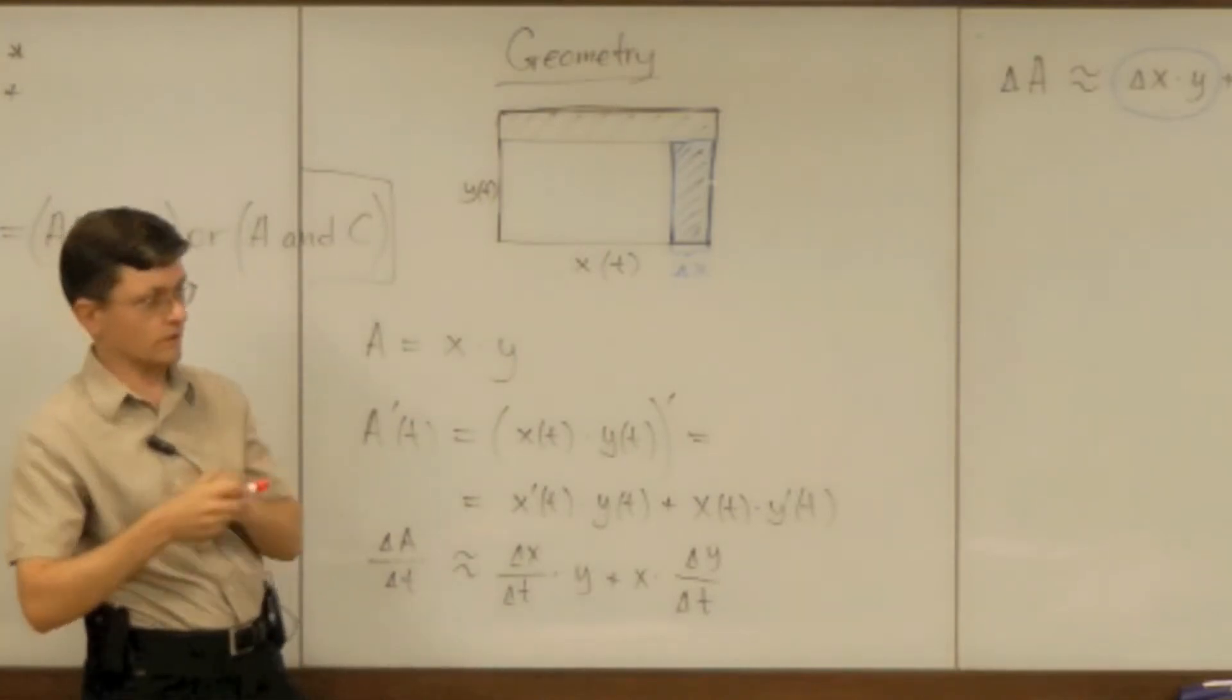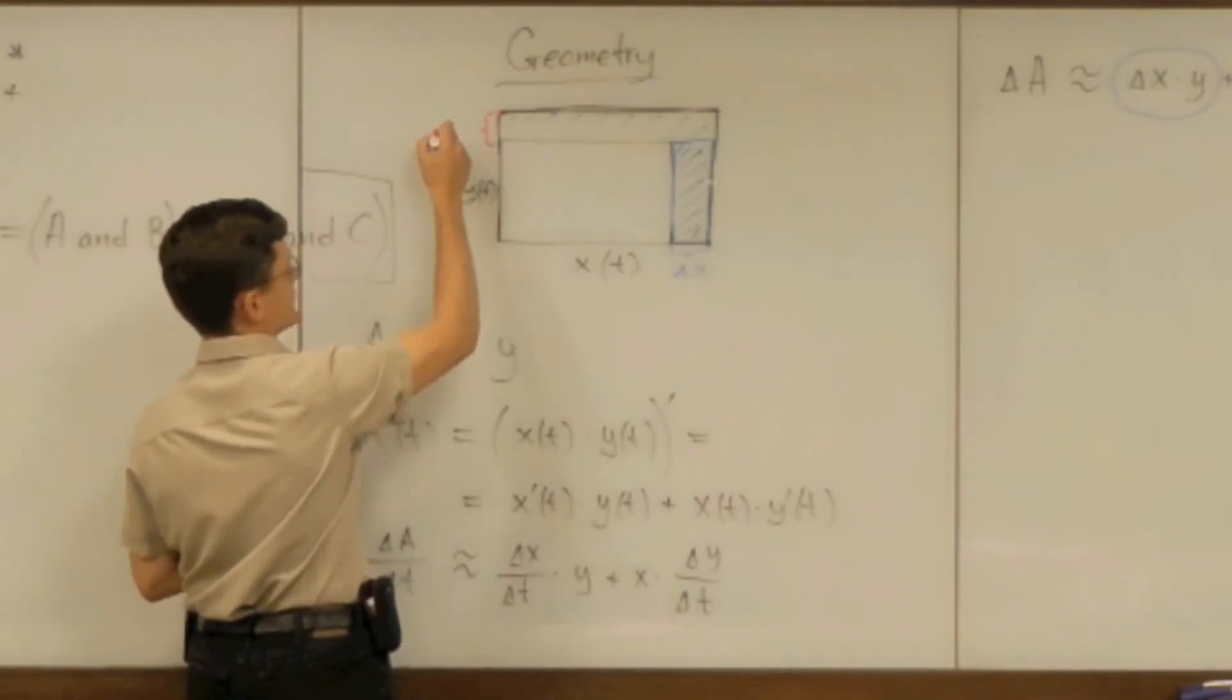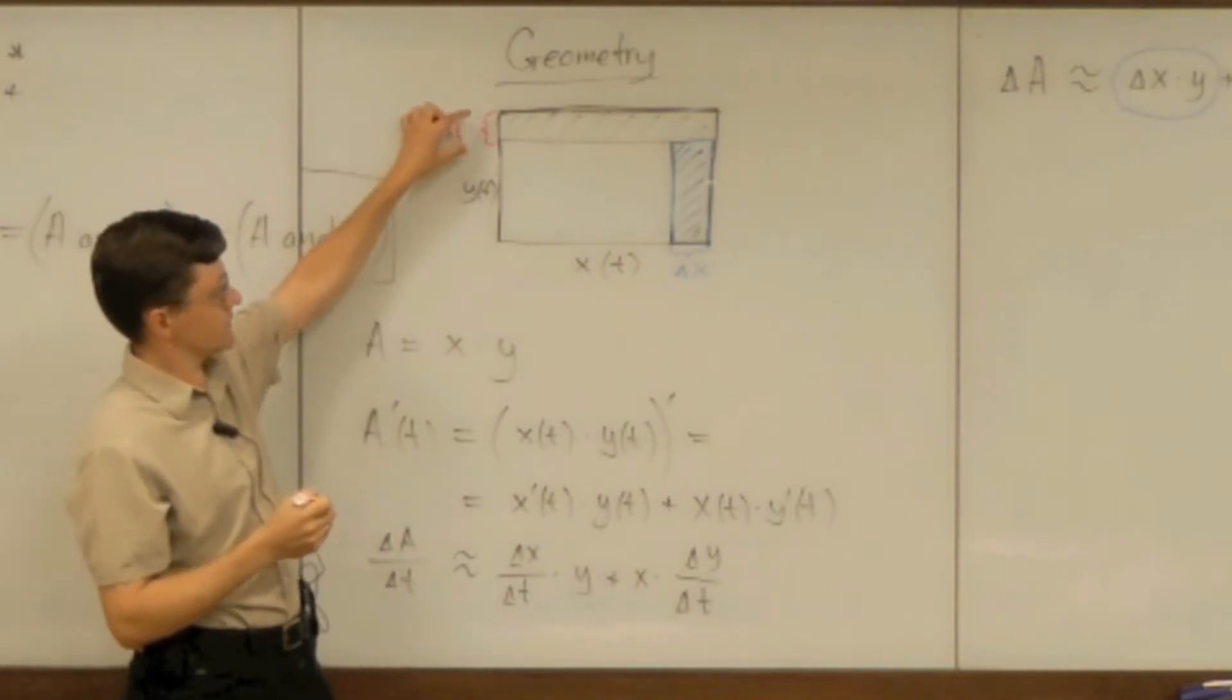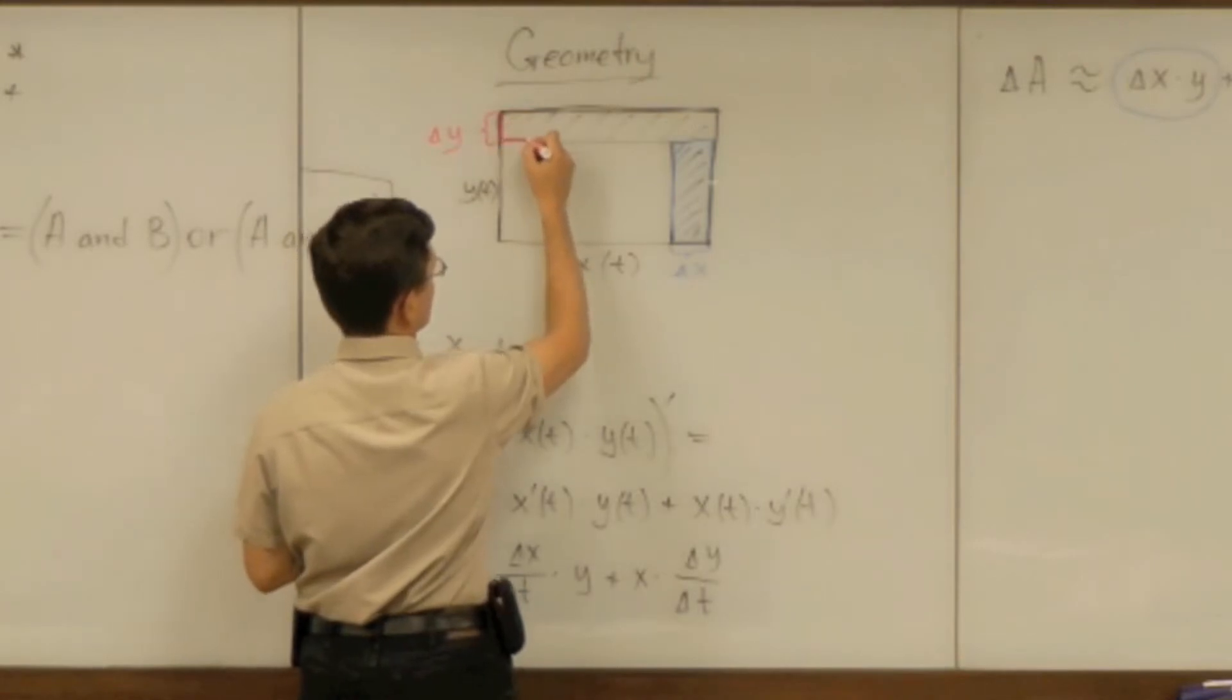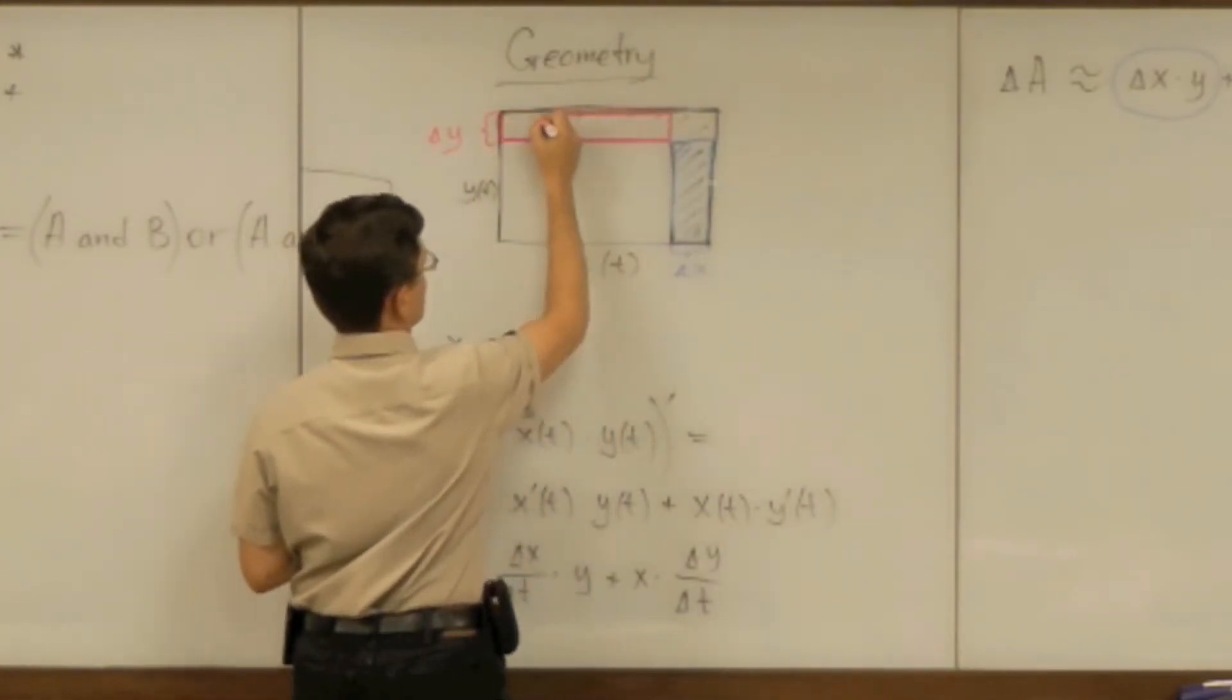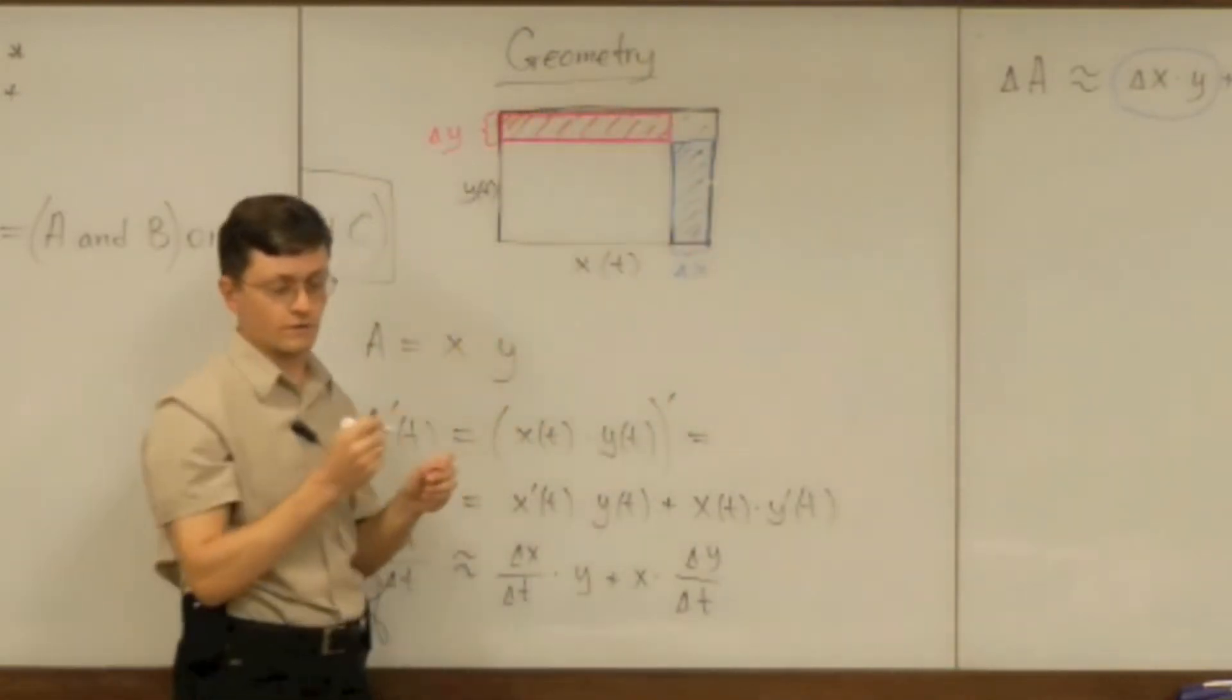What about the second term? x times delta y we can definitely see delta y. And if you multiply that by x you can see another narrow rectangle and its area is the second term.